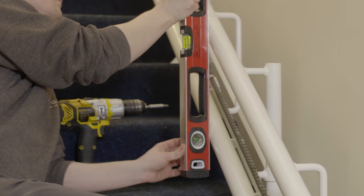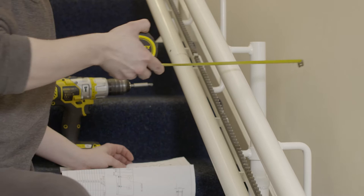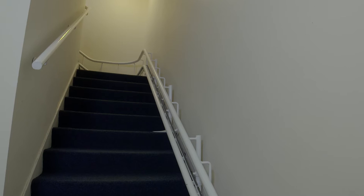Once the stairlift rail is complete, double check all rail heights, clearances and angles, and that the lower and upper rails are vertically level. Finally, ensure rail to wall measurements match the installation drawing.